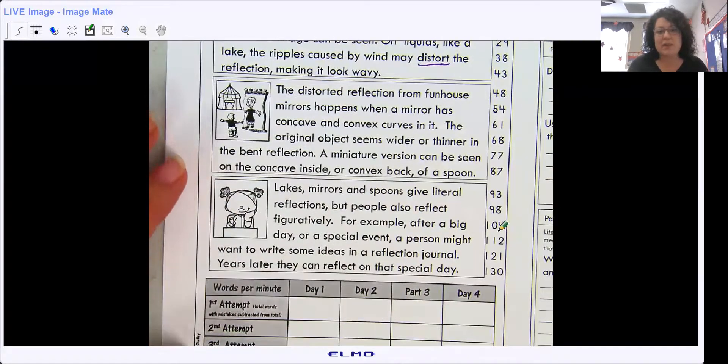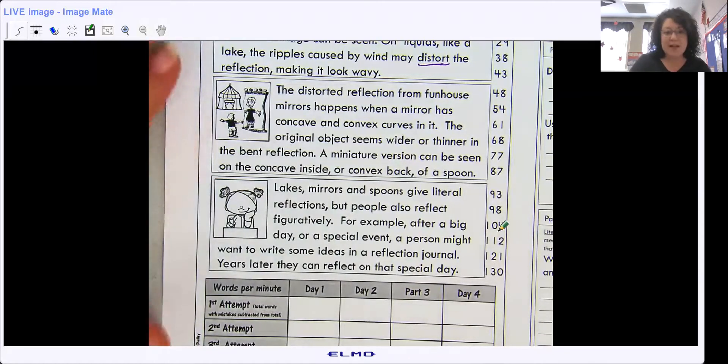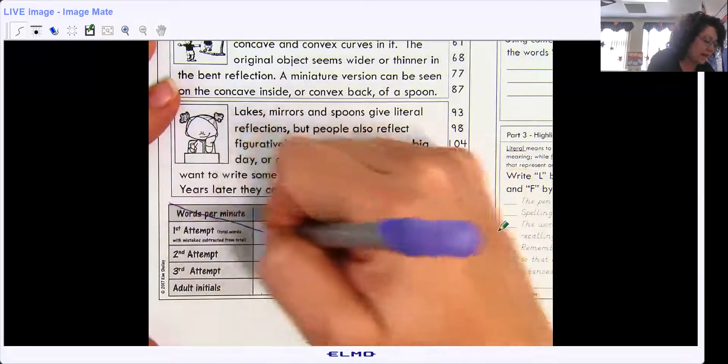Lakes and mirrors and spoons give literal reflections, but people also reflect figuratively. For example, after a big day or a special event, a person might want to write some ideas in a reflection journal. Years later, they can reflect on that special day. So you might do that even. Okay, so this passage is a little bit different. So we're going to mark out some of this stuff.